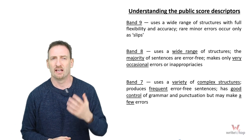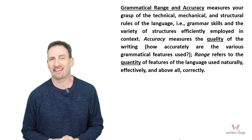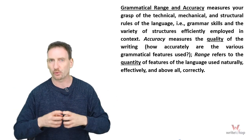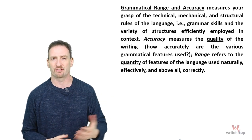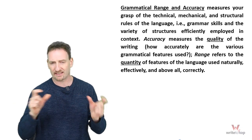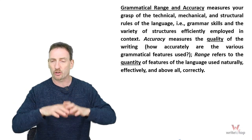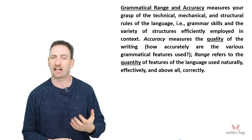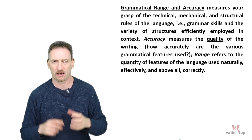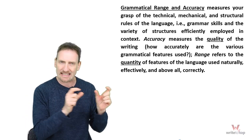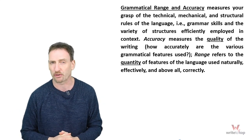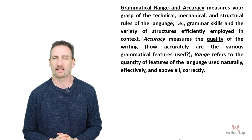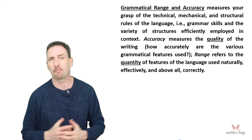The GRA criterion measures your grasp of the technical, mechanical, and structural rules of the language — basically how English works, how to put words and sentences together. Grammar skills and a variety of structures must be efficiently employed in context. Things have to work not only grammatically but also in relation to what's around them. Accuracy measures how correctly and appropriately the various grammatical features are used, while range refers to the quantity of features you use naturally and effectively.